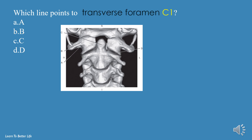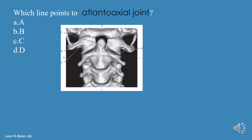Which line points to the transverse foramen of C1? A, B, C, or D? The answer is A. Which line points to the atlantoaxial joint? A, B, C, or D? The answer is D.